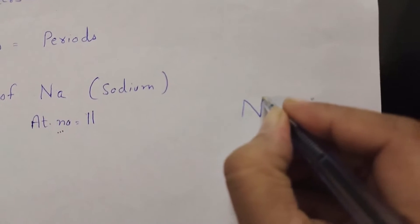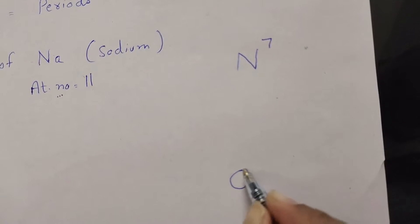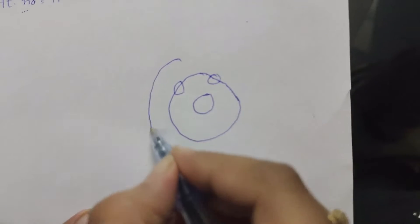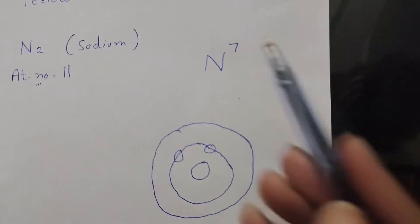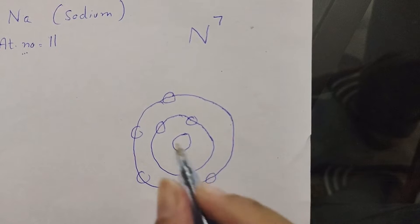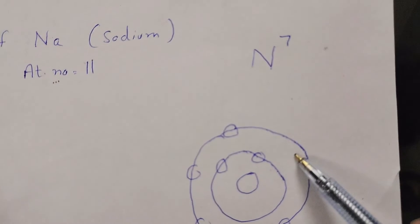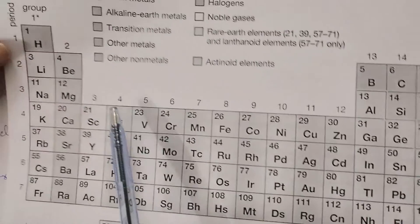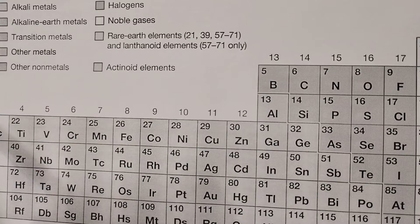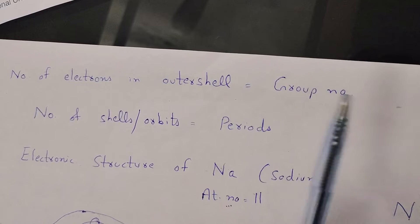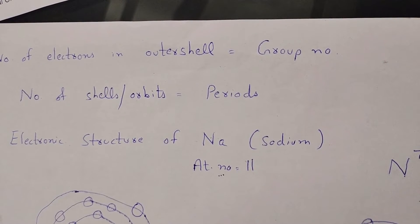Now let's draw the electronic structure of nitrogen, which has atomic number seven. Draw the nucleus and the first shell with two electrons, then place the remaining five electrons in the second shell. Two plus five equals seven. The number of shells is two, so nitrogen belongs to the second period. It has five electrons in the outer shell, so it belongs to group five.